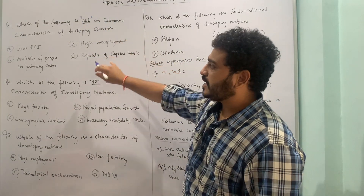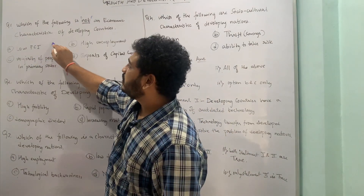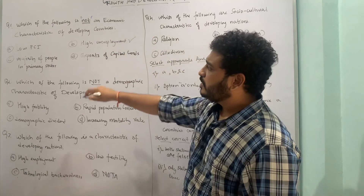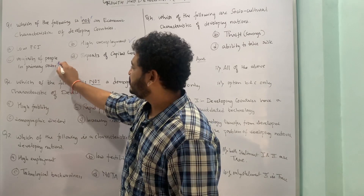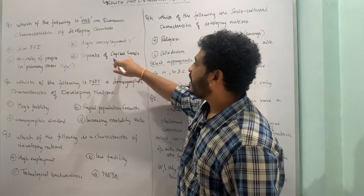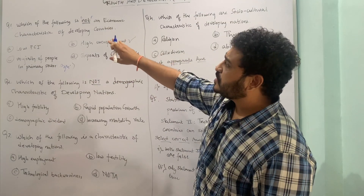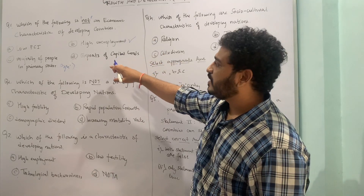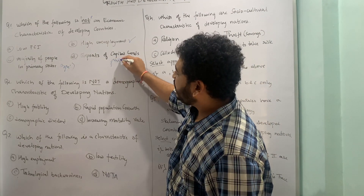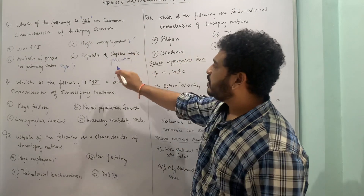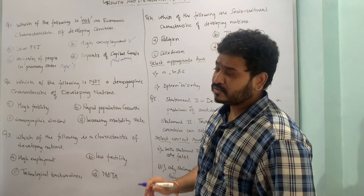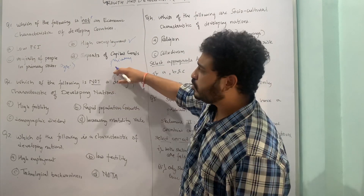The options are: low per capita income — yes, this is one; high unemployment — indeed that is a problem; majority of people working in the primary sector — yes, in agriculture; and exports of capital goods. We are asking which is NOT an economic characteristic. Exports of capital goods is not correct — most developing countries export primary goods, not capital goods.